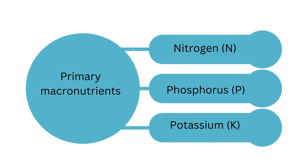These are the typical NPK that everybody understands — nitrogen, phosphorus, and potassium. These three nutrients are relatively needed by plants in very large quantities for their growth and development.